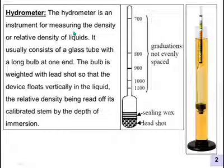For measuring the density or relative density of liquids, it usually consists of a glass tube with a long bulb at one end. The bulb is weighted with lead shot.